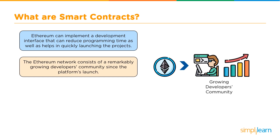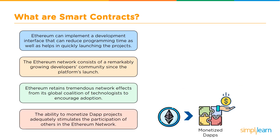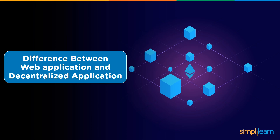Second, the Ethereum network consists of a remarkably growing developer community since the platform's launch. Third, Ethereum retains tremendous network effects from its global coalition of technologists who continue to pursue the network and actively develop user resources to encourage adoption. And last but not least, the ability to monetize dApp projects adequately stimulates the participation of others in the Ethereum network.